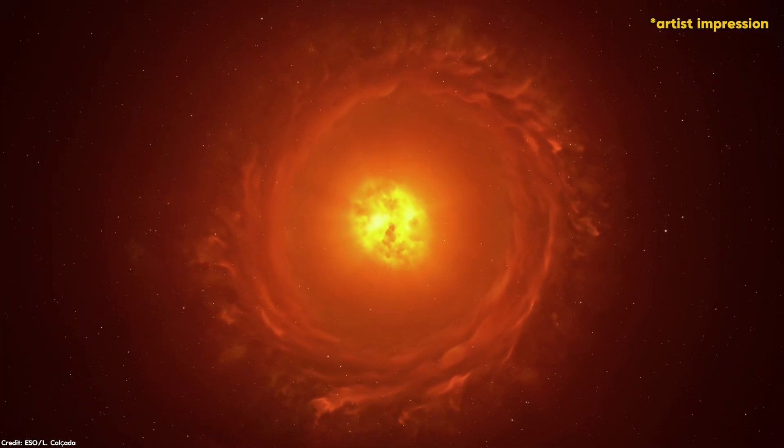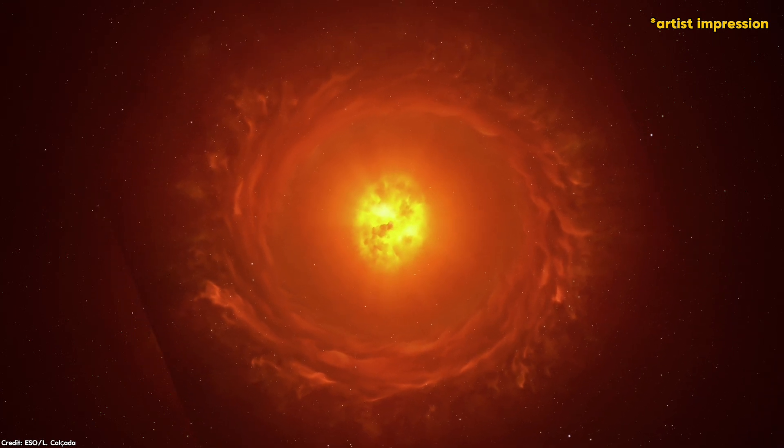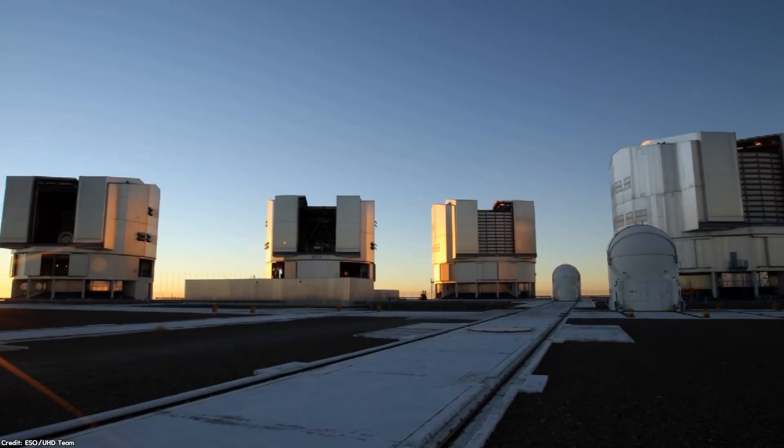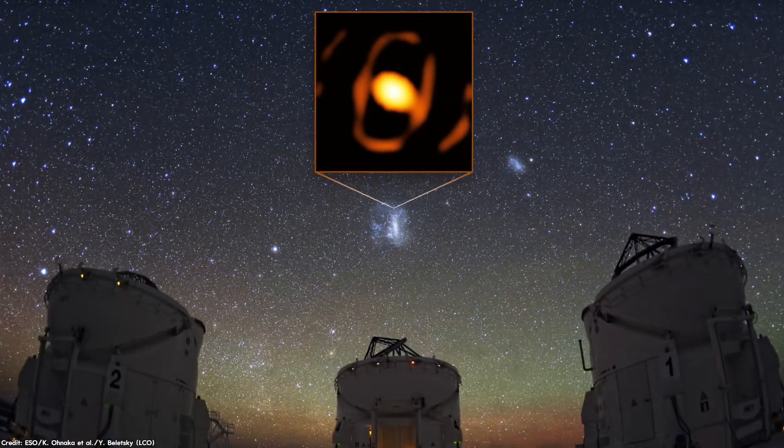And this big ring around WOH G64 is thanks to its shedding material creating a dusty cocoon surrounding the star. And it's not just a static shell, it's a dynamic, evolving structure shaped by the influence of the dying star. Using a very large telescope interferometer, astronomers have captured these stunning close-up images, revealing the star's dusty surroundings in amazing detail.